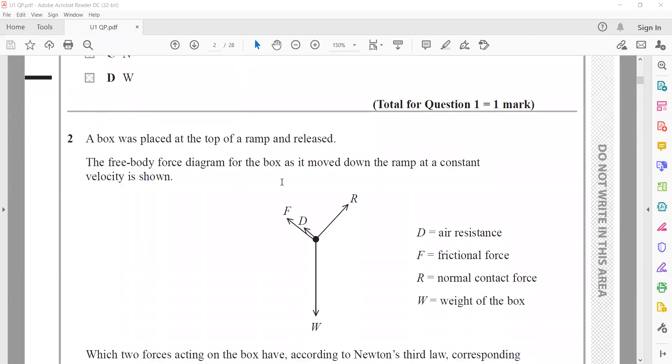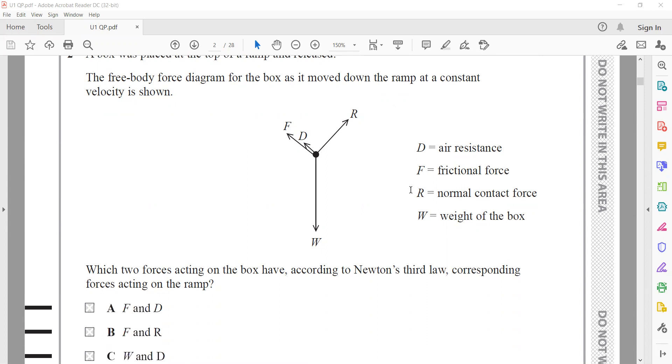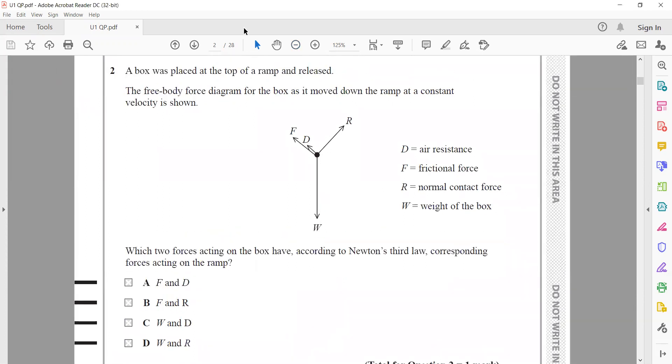A box was placed at the top of a ramp and released. A free body force diagram for the box as it moved down the ramp at constant velocity is shown. Which two forces acting on the box have, according to Newton's third law, corresponding forces acting on the ramp? The weight acting downward has two components: W cos theta perpendicular to the inclined surface and W sin theta acting along the surface. W sin theta balances with F and W cos theta balances with R. That's why B is the right answer.